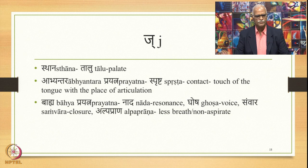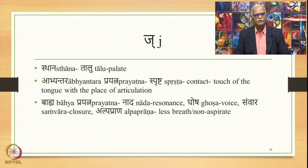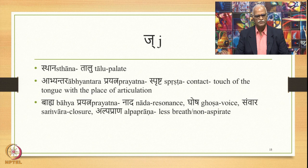Next we have ja. Once again, in some modern Indian languages there is a sound zh which gets represented by a similar written symbol — that is not present in Sanskrit. It is only ja which is present and described in the Paninian grammatical tradition as follows. The place of articulation or sthana is talu. The abhyantara prayatna is sprashta — contact or touch of the tongue with the place of articulation. The bahya prayatna of ja is nada, ghosha, and samvara — resonance, voice, and closure.